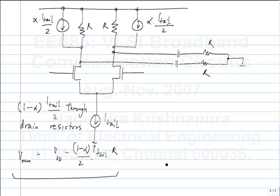What is the right value of alpha to use? It should be half. The maximum common mode is Vdd. What happens if alpha is more than half — say alpha equals 1? The quiescent current through R would be zero; only when I_tail switches completely to one side will current flow through R. What will be the output waveforms Vp and Vn if alpha equals 1?